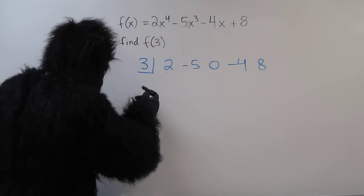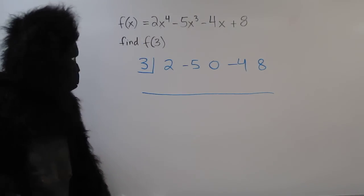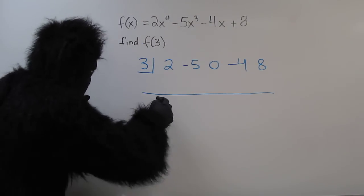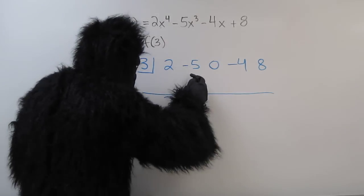Next, we draw a line. And here's how synthetic substitution works. We drop the 2 down, and we multiply 2 times 3. That's 6.